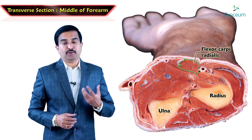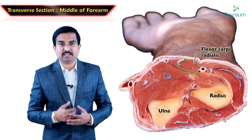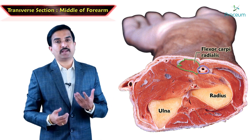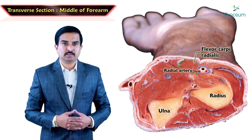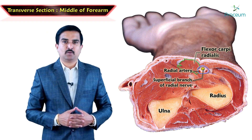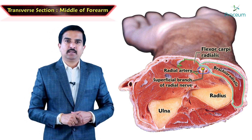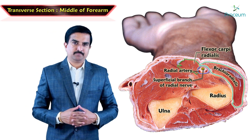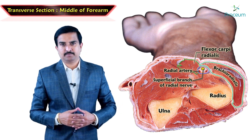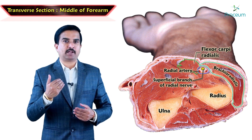Along with the flexor carpi radialis, on its lateral side a neurovascular bundle is seen which comprises the radial artery and the superficial branch of the radial nerve, both of which are underneath the brachioradialis muscle. The superficial branch of the radial nerve provides sensory innervation to much of the back of the hand.